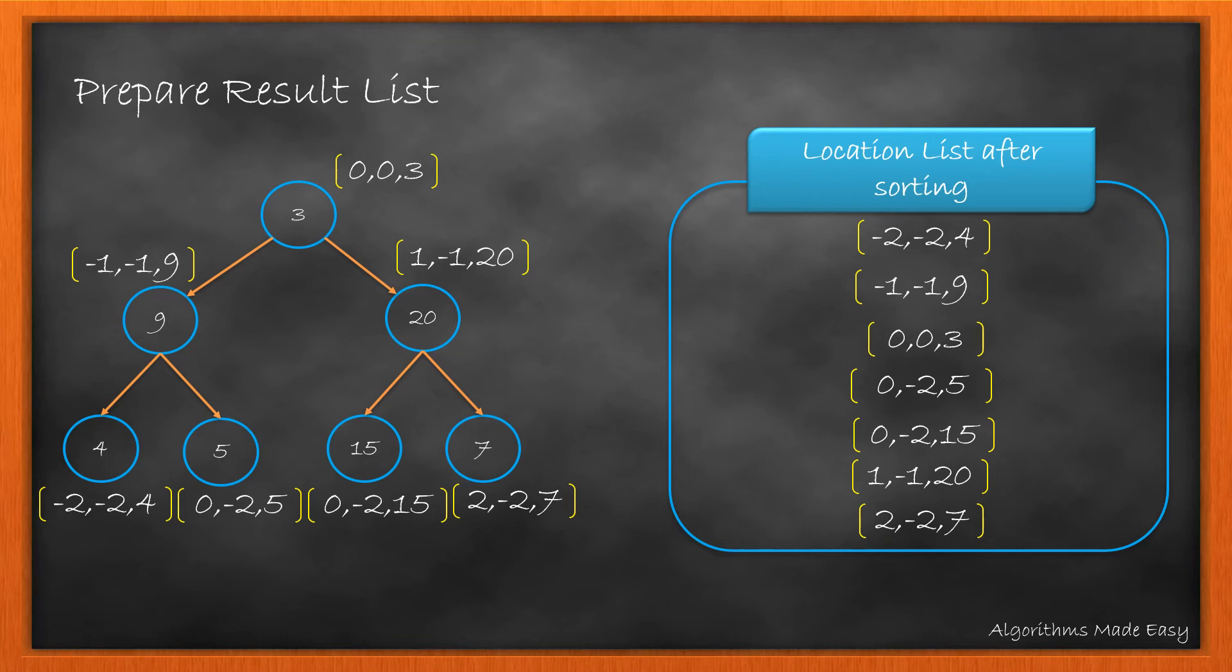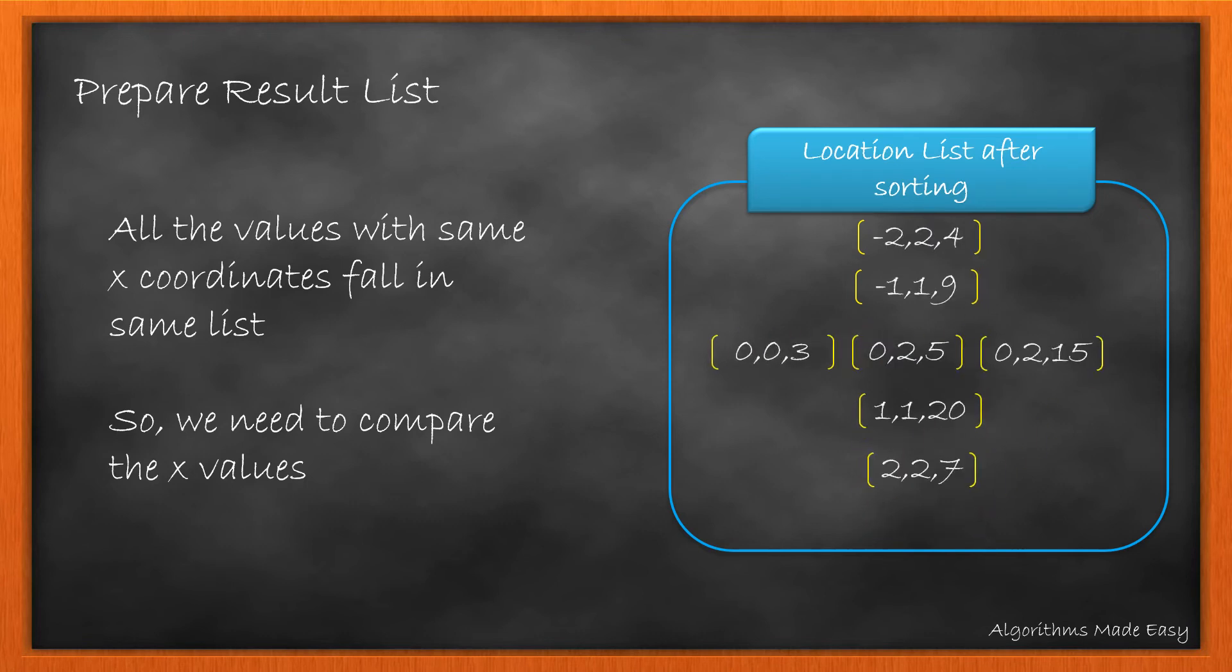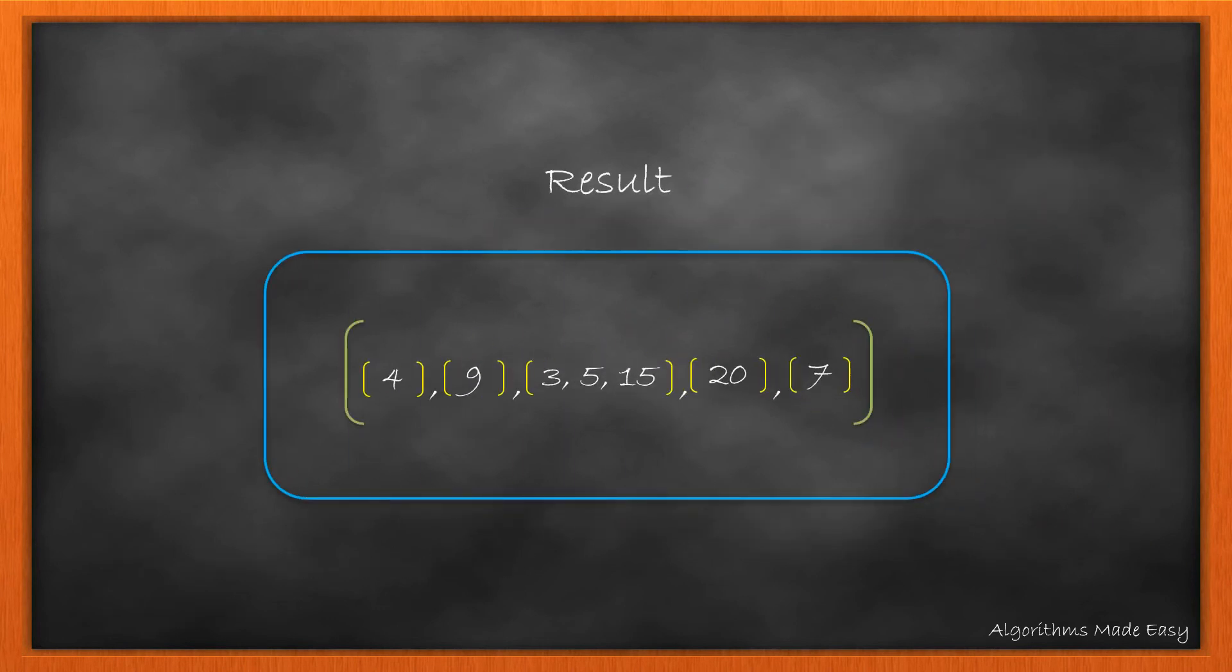So, we will prepare the result list from our location list by iterating through it. All the values with same x-coordinate would fall in the same list. So, we need to compare the x-coordinate values in each iteration and bring the same x values together. If x is same, we would need to put the values in same list or create a new one. So, the values will get combined in this manner. At the end, we return this result list.